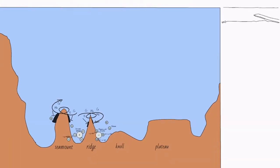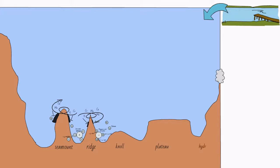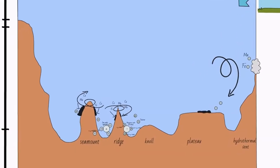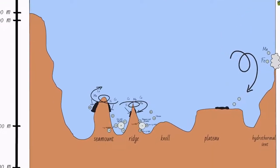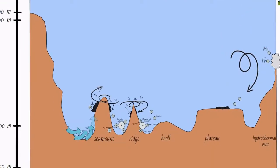Most of the elements found in the crusts are originally eroded material from the continents. They are washed out by rivers and transported to the ocean. Only iron and manganese originate from the ocean. In the Atlantic they are released into the water through hydrothermal vents found in areas of volcanic activity, and in the Pacific they originate from upwelling cold seeps that are not connected to hydrothermal activity, except for some volcanic arcs.